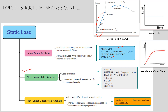In non-linear static analysis, the load is applied constant with respect to time, but here it accounts for material, geometry, or boundary non-linearity. Looking at the Abaqus card, you can clearly see the difference between linear and non-linear. In linear, we use only elastic properties. In non-linear, we also consider material non-linearity — plastic properties including yield strength and ultimate strength with respect to percentage elongation.